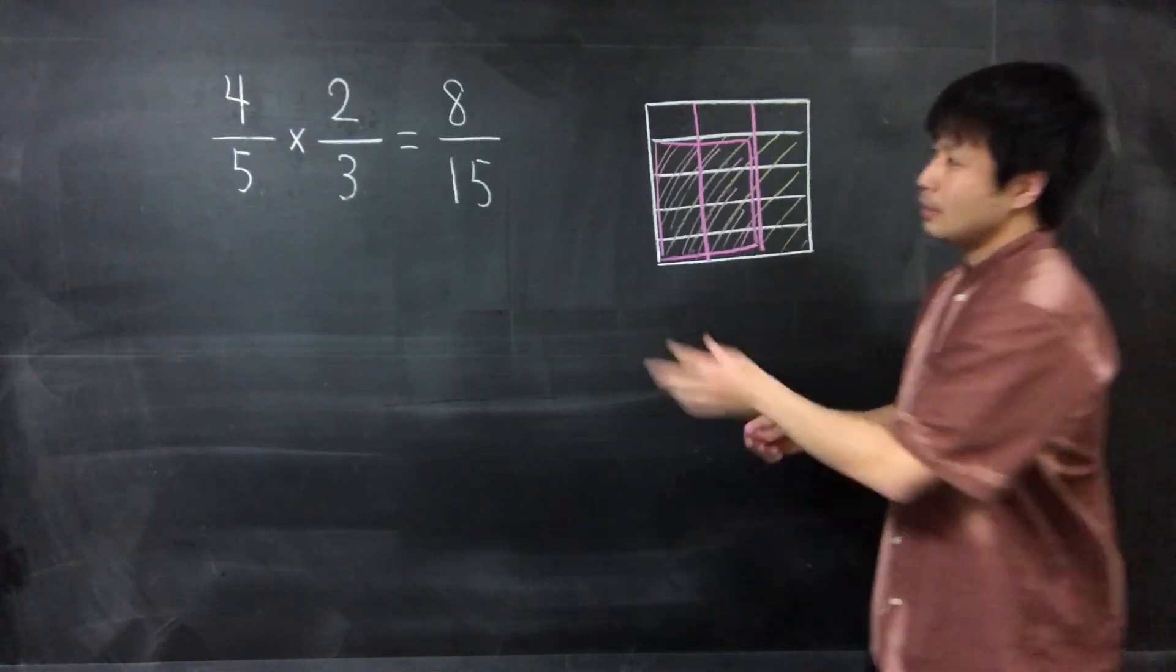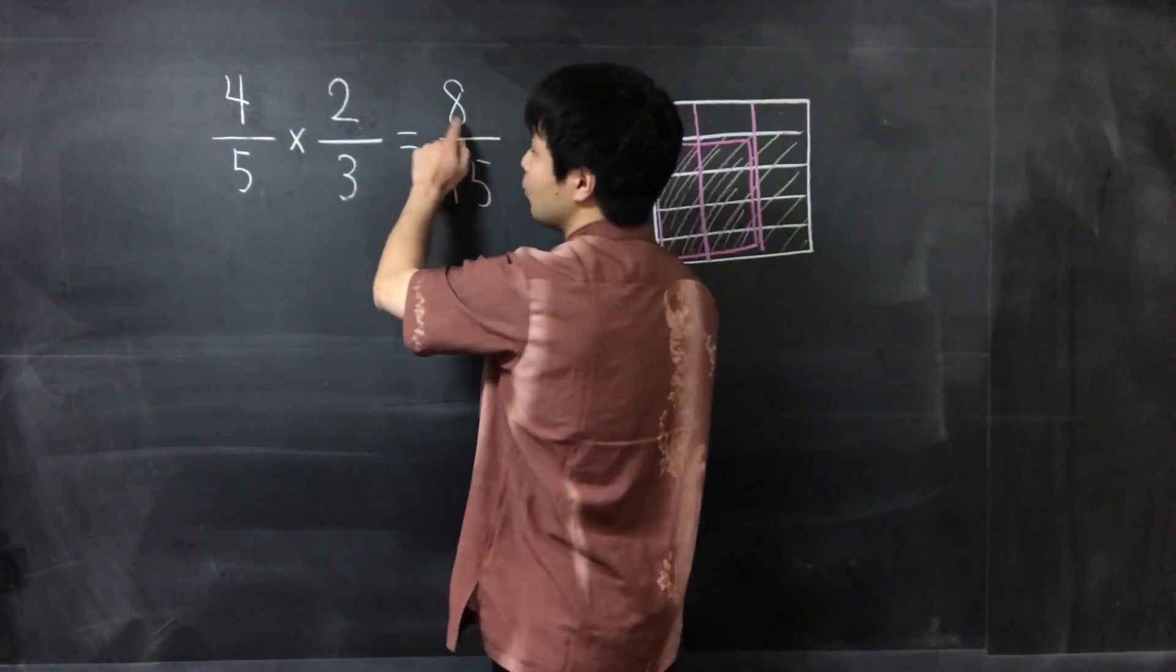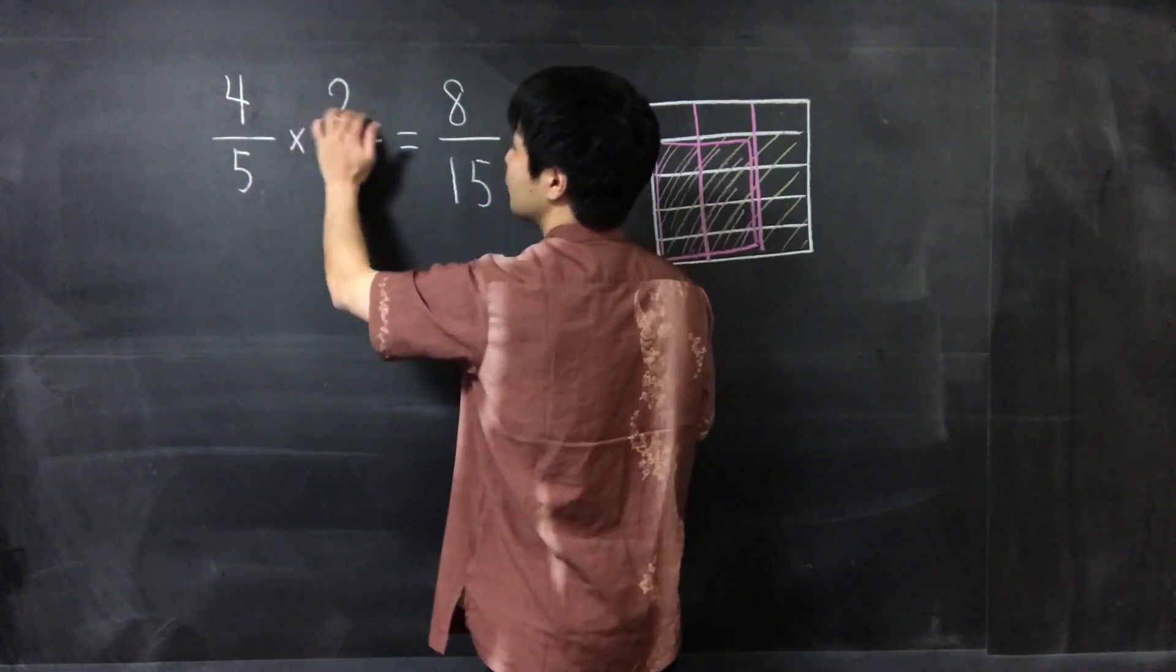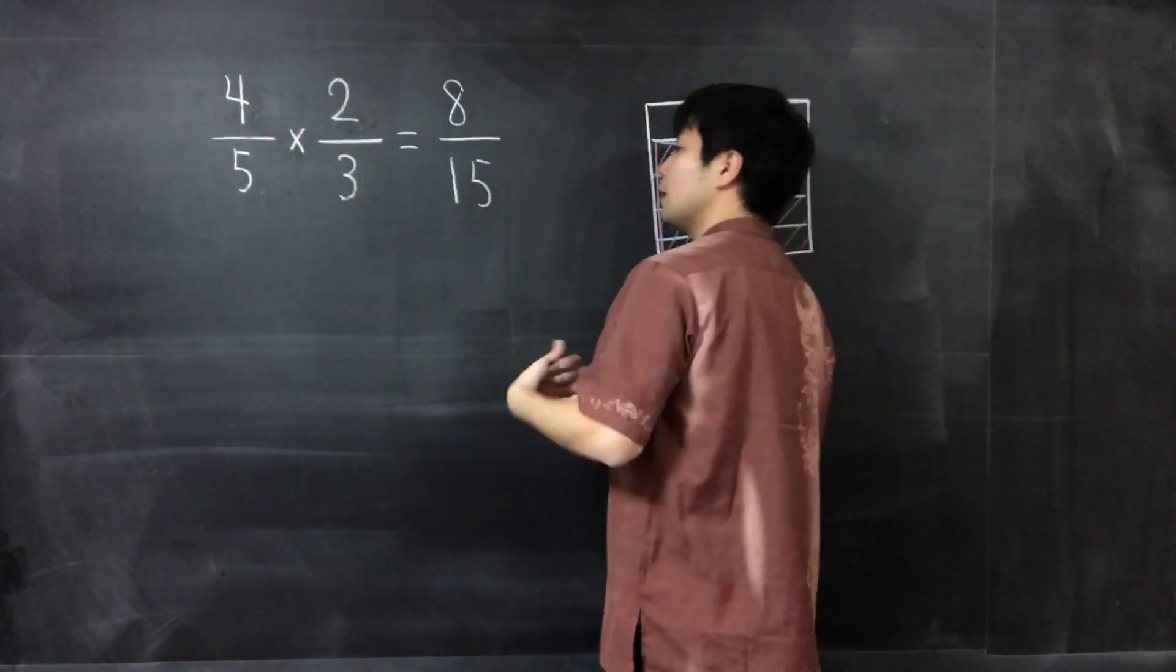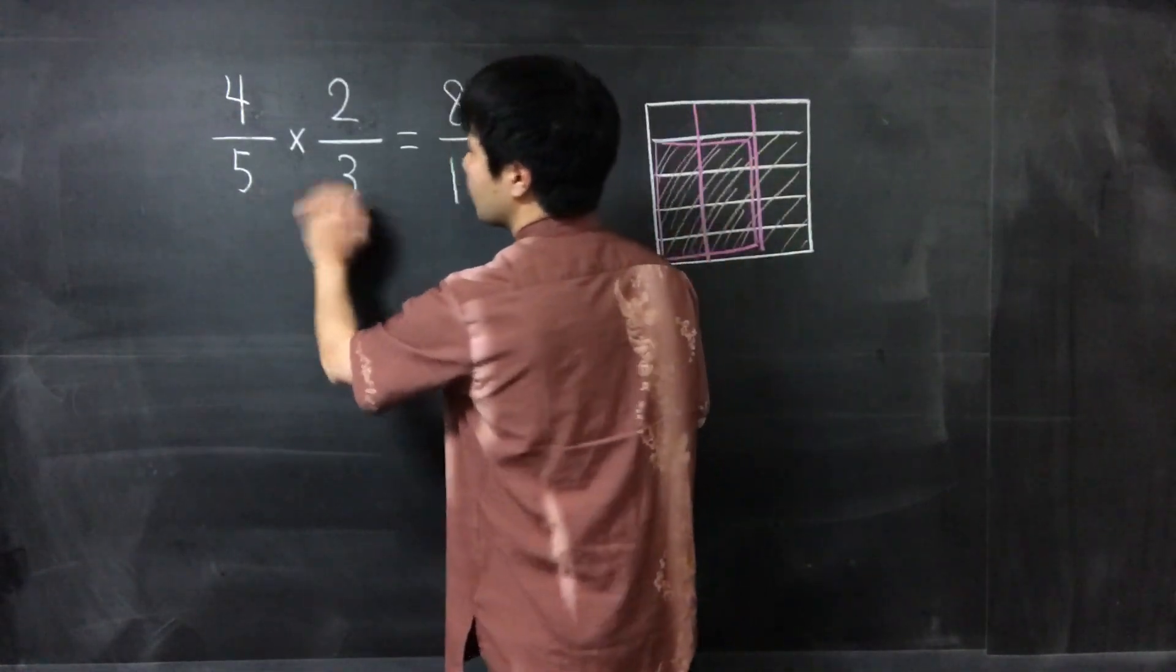So 8 is obtained from multiplying the numerators and 15 is obtained by multiplying the denominators.